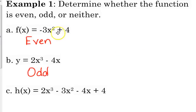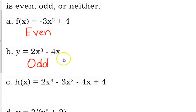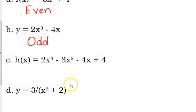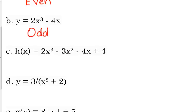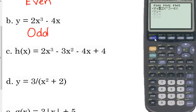Notice on A the exponent is an even number. On B the exponents are odd numbers. C we're looking at a function with both odd and even numbers. So I don't know, let's see how this one turns out. 2x cubed minus 3x squared minus 4x plus 4.